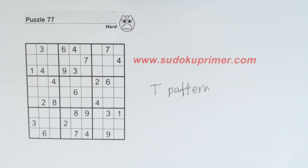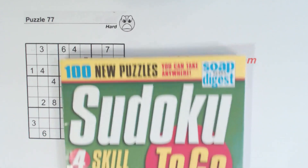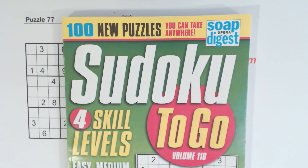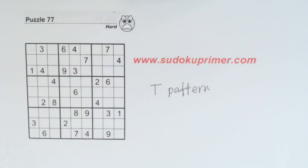This is puzzle 77 from Sudoku to Go Volume 118 by Soap Opera Digest. This video covers the T pattern, another one in this video series on patterns.